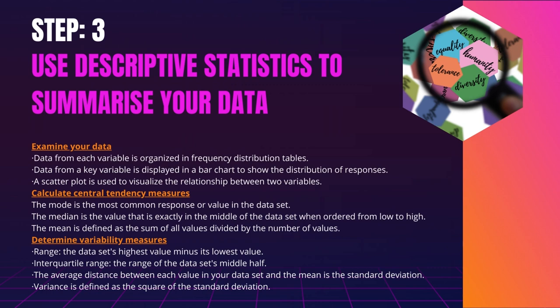Step 3: Use descriptive statistics to summarize your data. After you've gathered all of your data, you can examine it and generate descriptive statistics that summarize it. Examine your data. There are several methods for inspecting your data, including the following: data from each variable is organized in frequency distribution tables; data from a key variable is displayed in a bar chart to show the distribution of responses; a scatter plot is used to visualize the relationship between two variables.